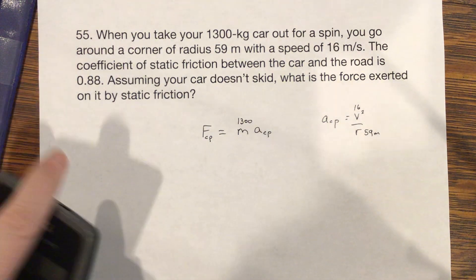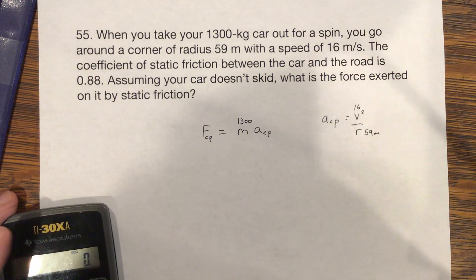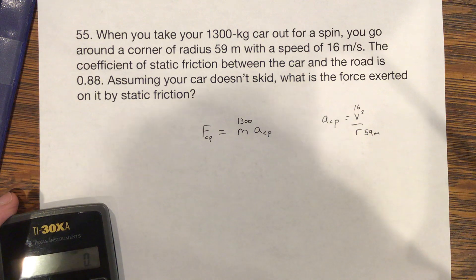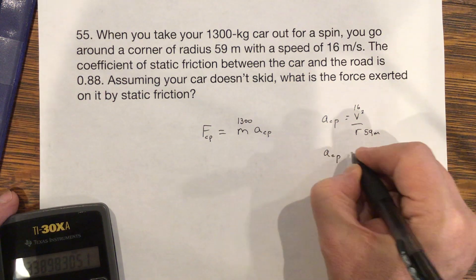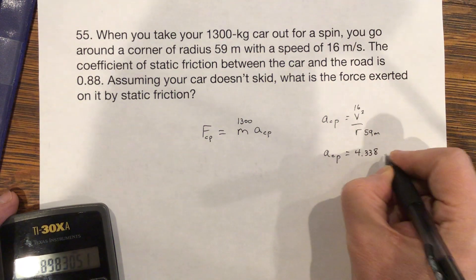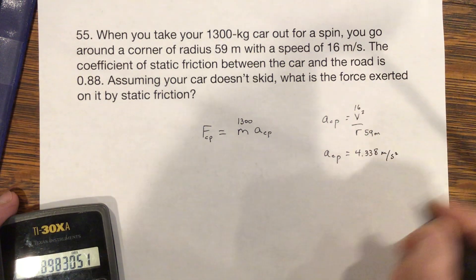Okay, so let's first of all get our acceleration. Our acceleration is 16 squared divided by 59. So our centripetal acceleration equals 4.338 meters per second squared.